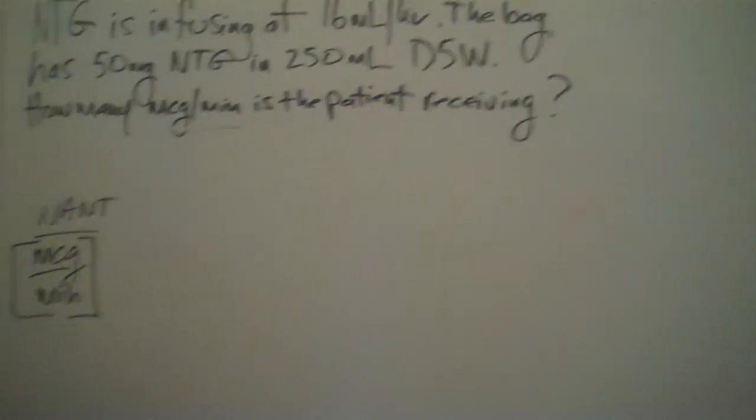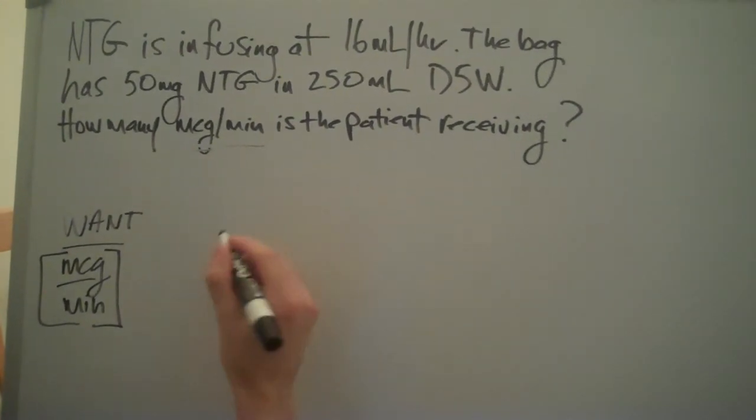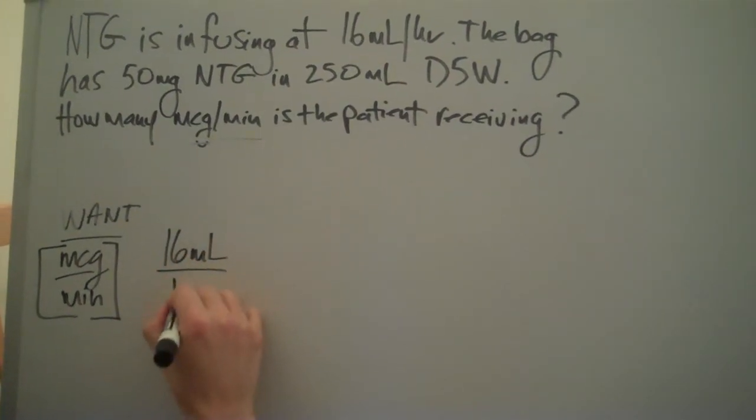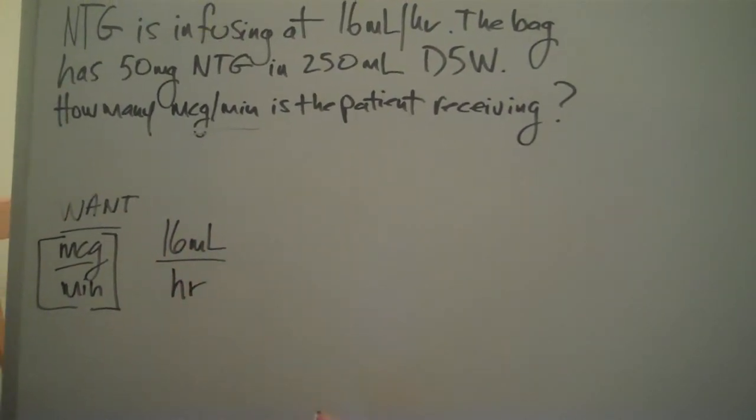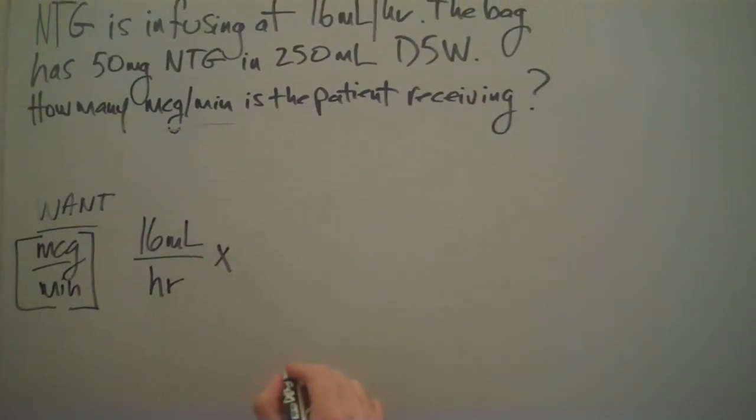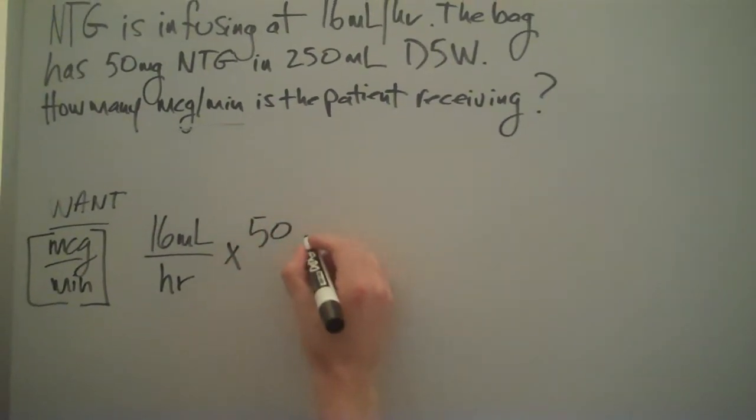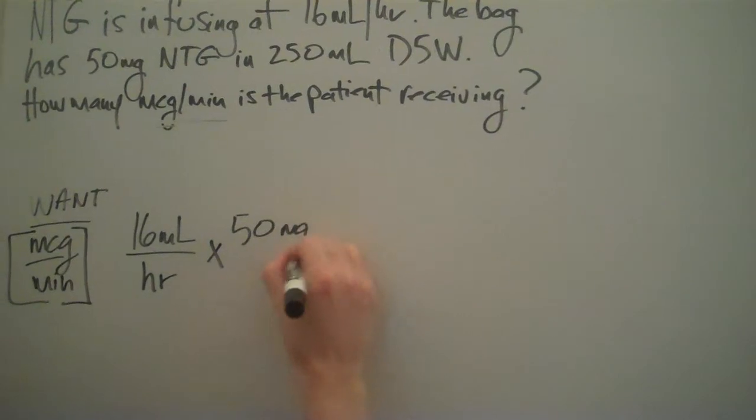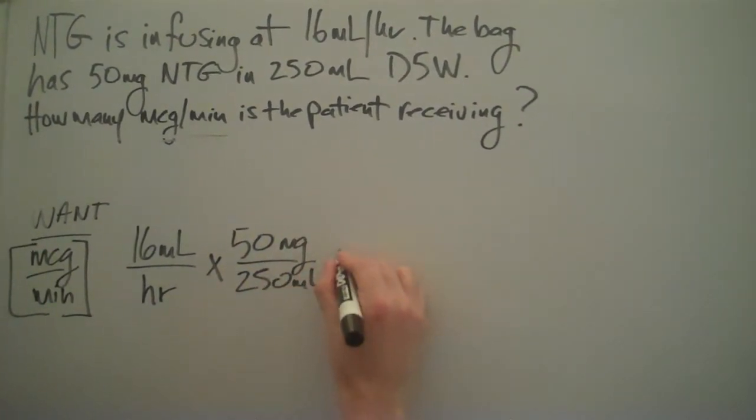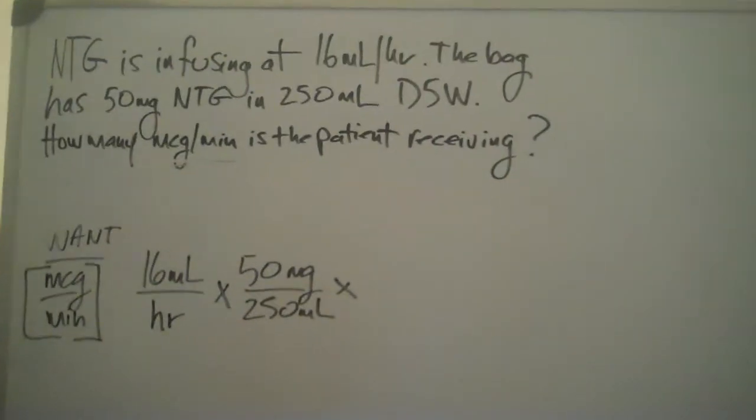And we're going to be systematically crossing out like terms. We have our rate, 16 milliliters per hour, so we're going to be plugging in everything that we're given. We have 50 milligrams in 250 mL, and now we need two of our conversions.